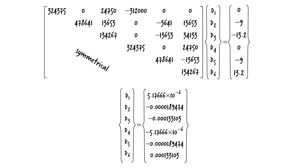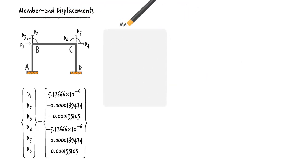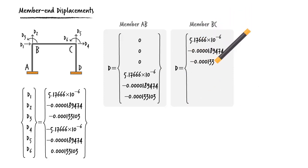Using this joint displacement vector, we can write the displacement vector for each member. For AB, we get the displacement vector. Note that since joint A is fixed, displacements and rotation at the joint are zero. For BC, we have another displacement vector. And for DC, we can write its corresponding displacement vector.